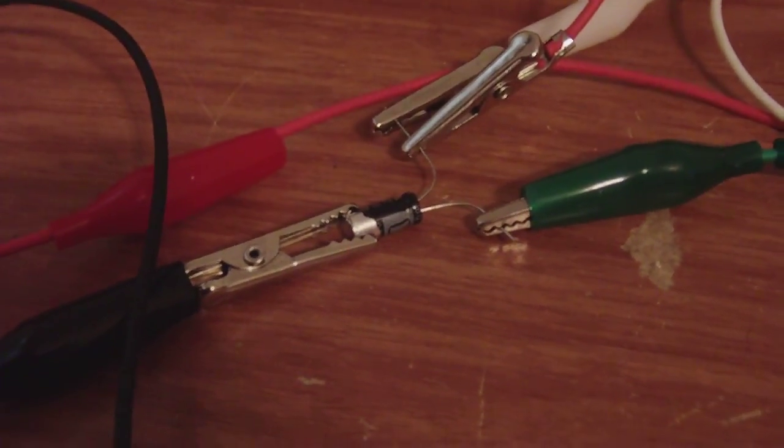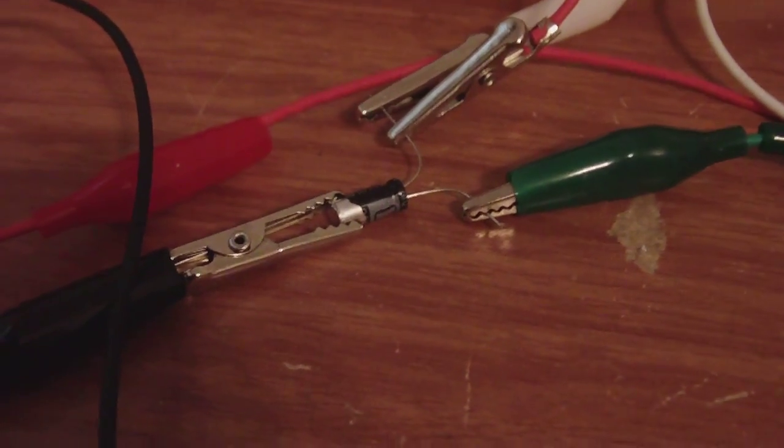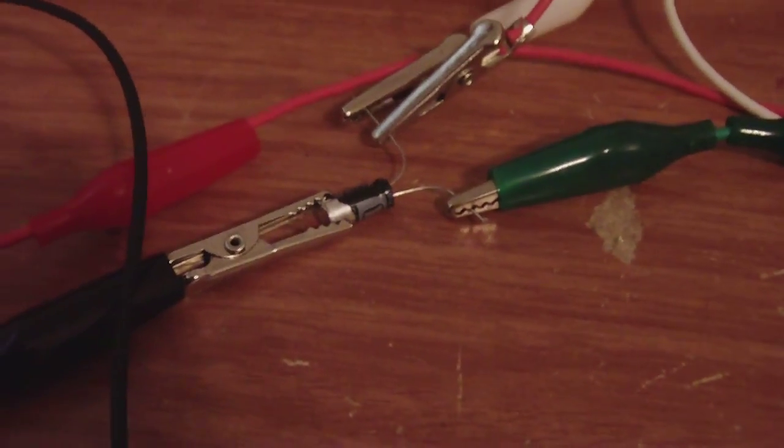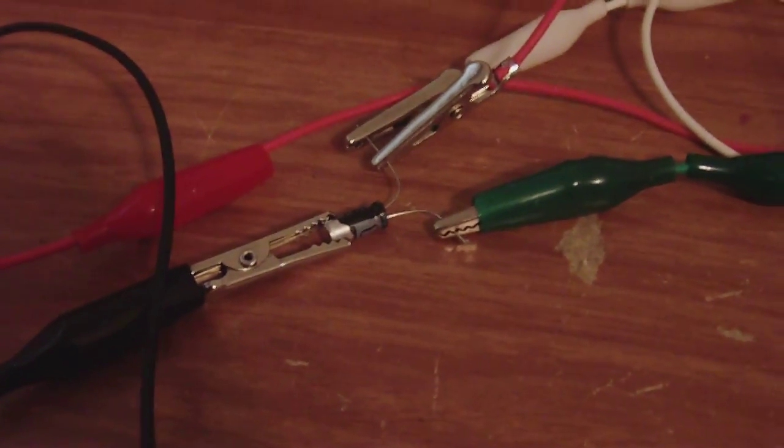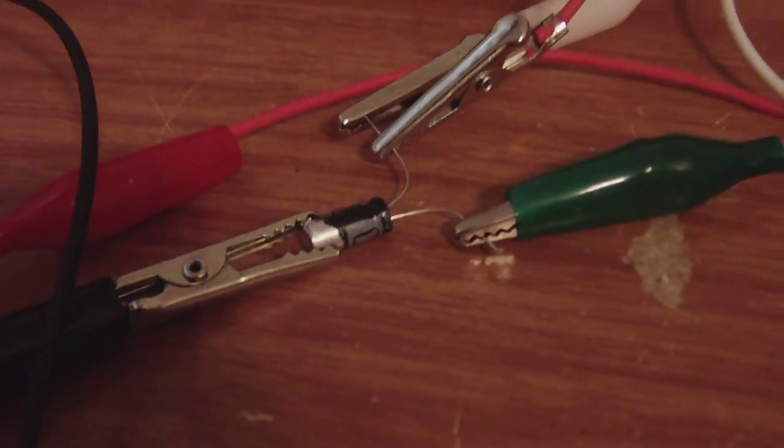That's a one micro farad capacitor at 50 volts, which is a very simple LED driver circuit with a very simple modification. All you gotta do is skin the outer layer of the capacitor off. It will work with one nine-volt battery. It just gives off better light with two.